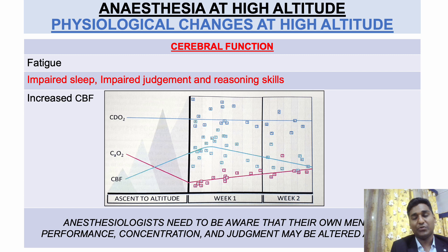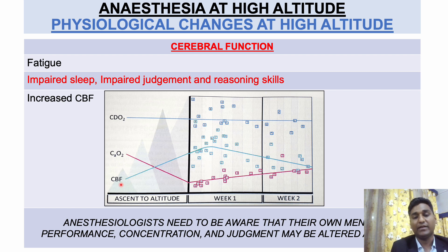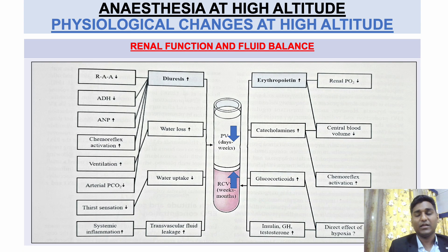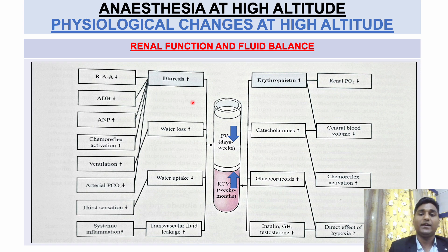As we ascend to higher altitudes, there is fatigue and impaired sleep. Decreased oxygen content in the blood leads to increased cerebral blood flow to maintain constant oxygen delivery to the brain. We anesthesiologists must be aware that even our own judgment might be impaired at higher altitudes. Regarding renal functions, there is hypovolemia mainly due to increased diuresis, increased water loss, and decreased water intake, along with hemoconcentration due to increased erythropoietin and catecholamine levels.